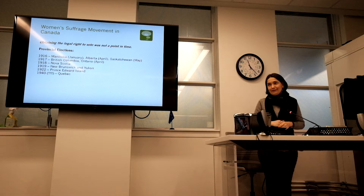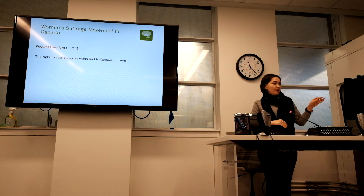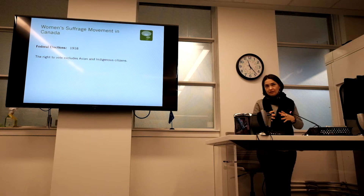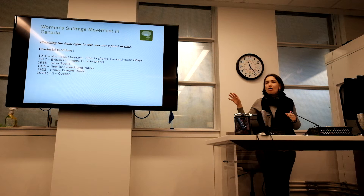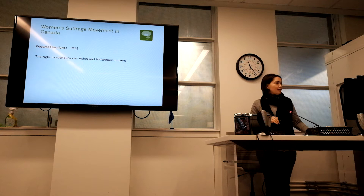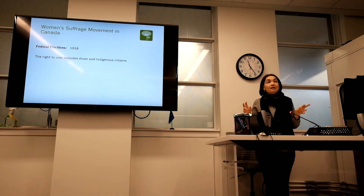Quebec only granted women the right to vote in 1940. So before 1940, if you were a woman living in Quebec, you had no legal right to vote. Women received the right to vote in federal elections in 1918 — across Canada. So women in Quebec, New Brunswick, Yukon, and PEI were eligible to vote in federal elections but not in their own province. However, the federal right to vote excluded Asian and Indigenous citizens. So when we talk about granting women the right to vote, we're talking about white and black women — but not Asian women or Indigenous people.